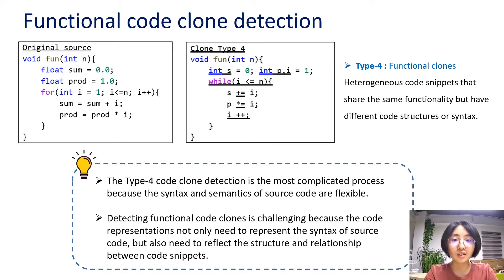Functional code clone means that the structure and the syntax of the cloned code and the source code are very different, but the functionalities achieved are the same. It is the most complicated clone type because the syntax and the semantics of the source code are flexible. Many approaches try to use syntax-based or semantics-based information to represent source code. Based on the existing research, we have proposed a novel code representation with syntax and semantics fusion learning to better detect code clones.